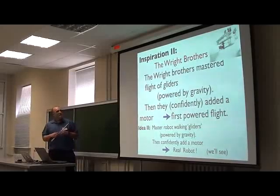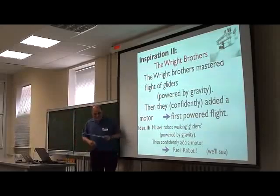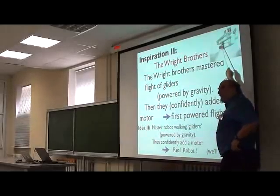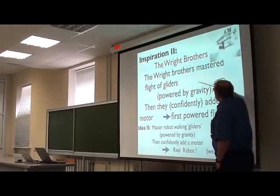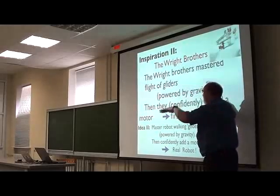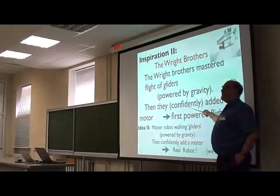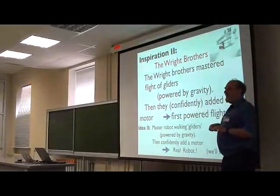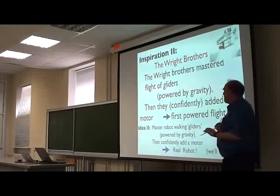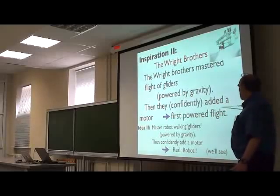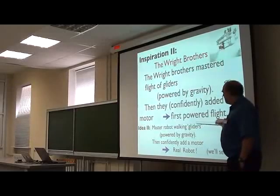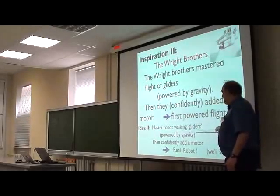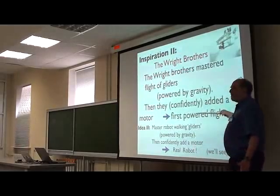The second idea is from the Wright Brothers, who invented airplanes. They started with gliders — airplanes that fly downhill — and then added a motor with confidence. They wrote a letter to their sister saying tomorrow they'd put the motor on and it would fly. The motor broke, but the day after they fixed it and the airplane flew. The idea for walking robots: let's master gliders first — robots without motors — make them work well, and then confidently add motors to get a real robot.